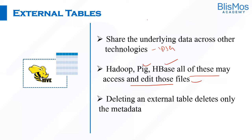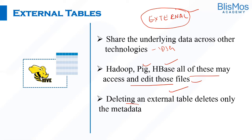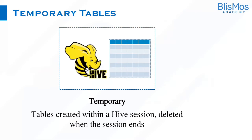External tables share the underlying data across other technologies like Pig, HBase, and others that access data in the external table. To create an external table, we provide the keyword 'external.' If you're not providing any keyword, Hive assumes it as a managed table and defaults the data storage to user/hive/warehouse directory. When you delete an external table, it deletes only the metadata, because we provide a different directory path for data storage. Even though you drop an external table, it will delete only the metadata and would not delete the actual data.